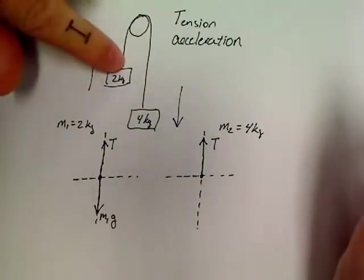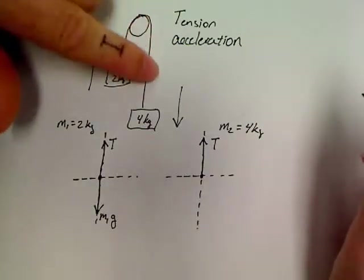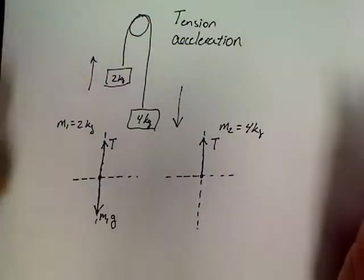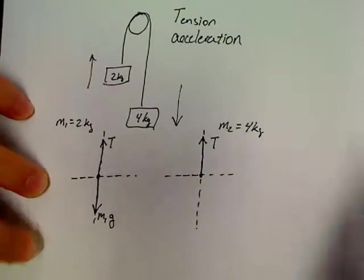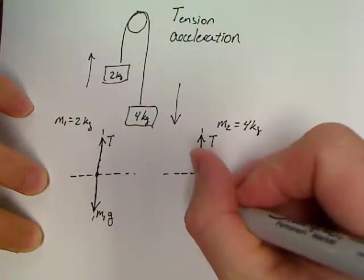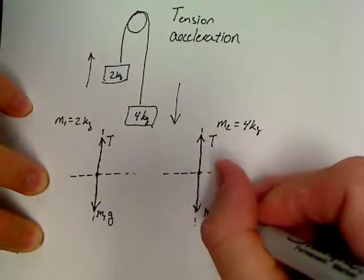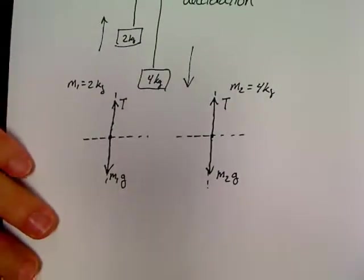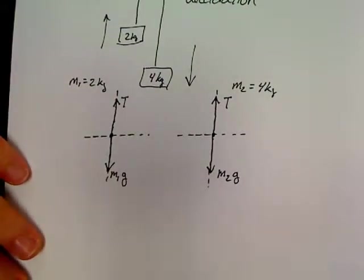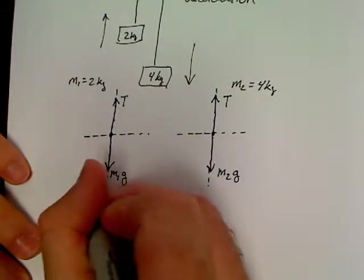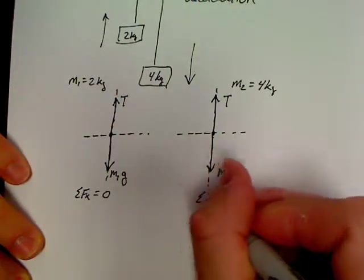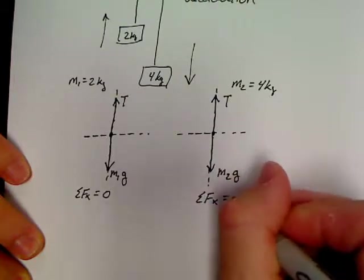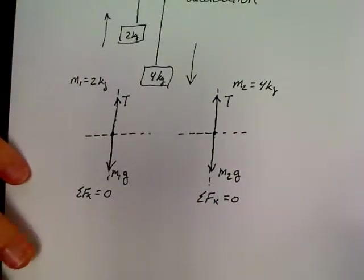Now this is where somebody would call T1 and T2. These are not T1 and T2. This string, since this is a massless pulley, has the same tension on both sides. So we've got the same T going up here and we've got an M2g going down over here.